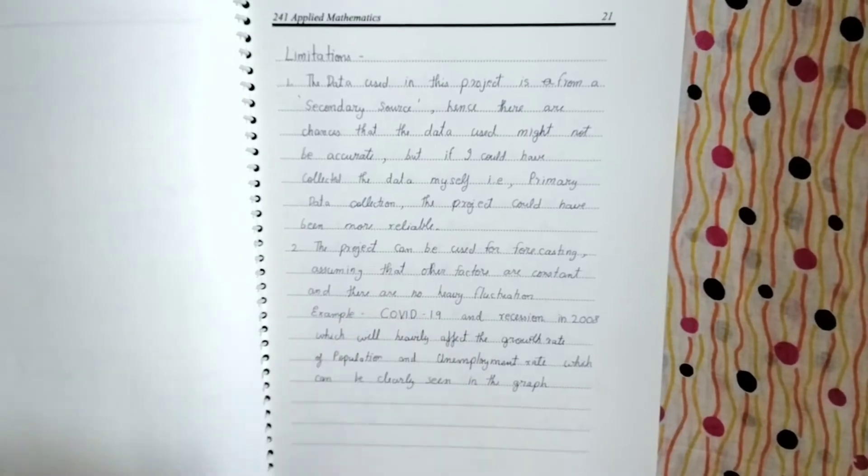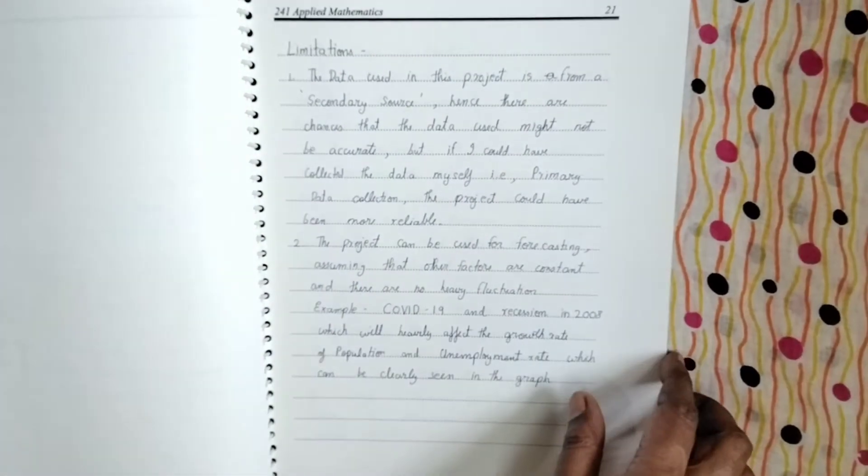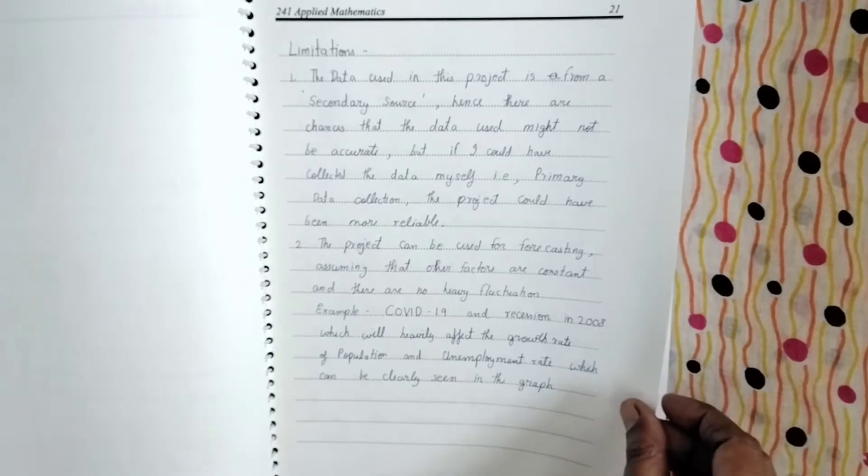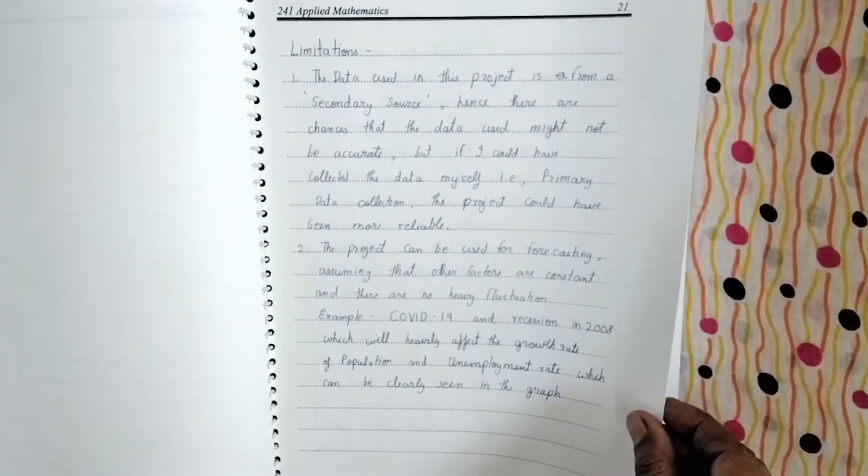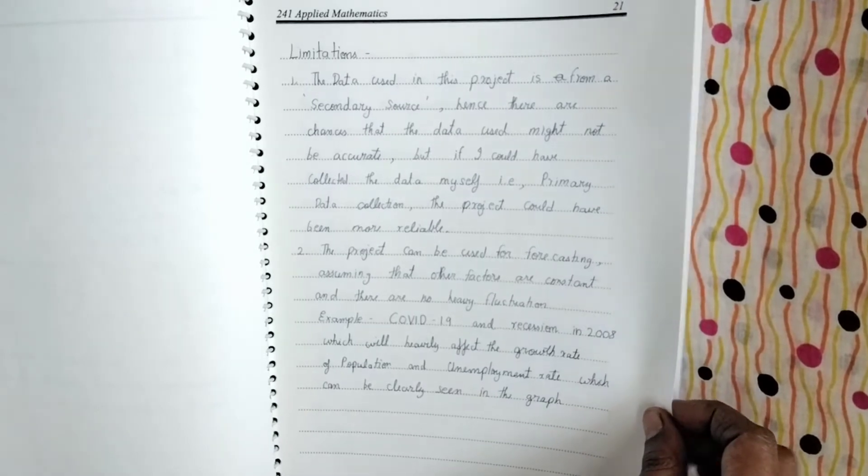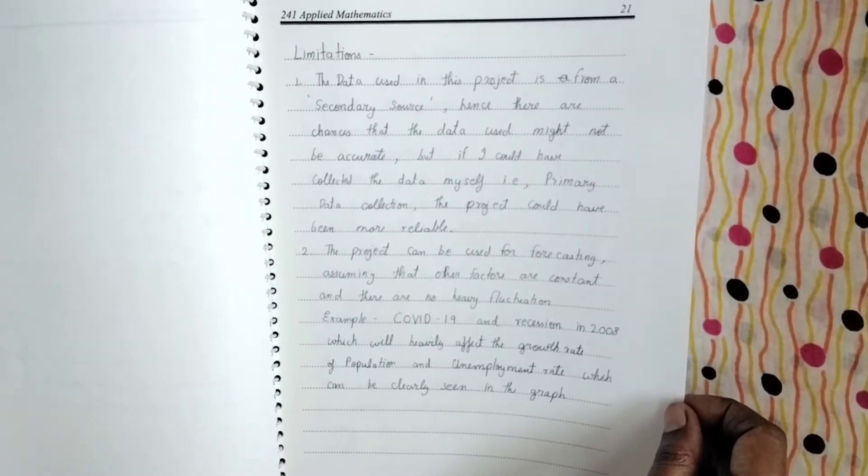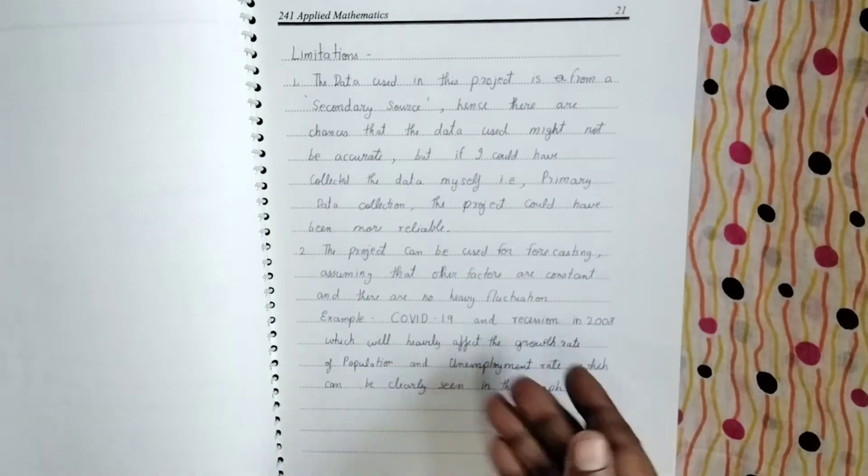So what he's given is the data used in this project is from a secondary source. Hence, there are chances that the data used might not be accurate. But if I could have collected the data myself, primary data collection, the project could have been even more reliable. So he's explained all this.